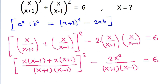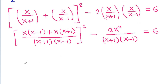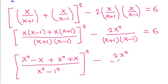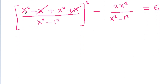That is x²-x + x²+x in the numerator, and (x+1)(x-1) which equals x²-1 in the denominator. Minus 2x² over (x+1)(x-1), which is x²-1, is equal to 6. The x terms cancel, leaving 2x².